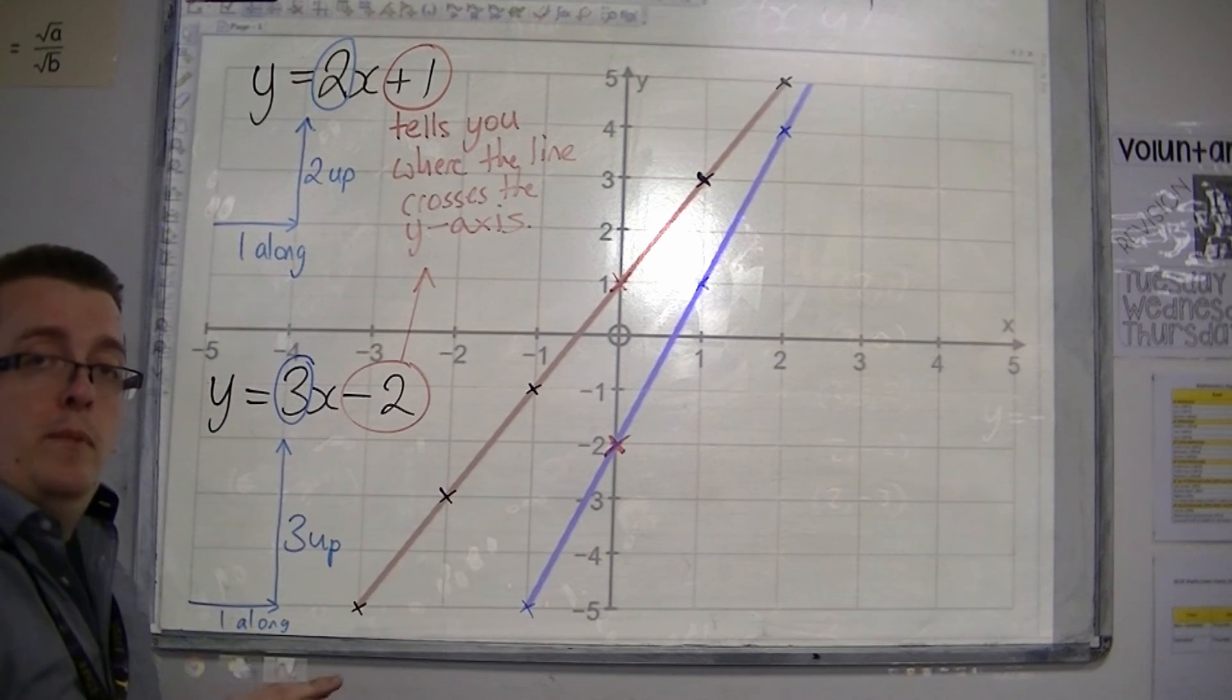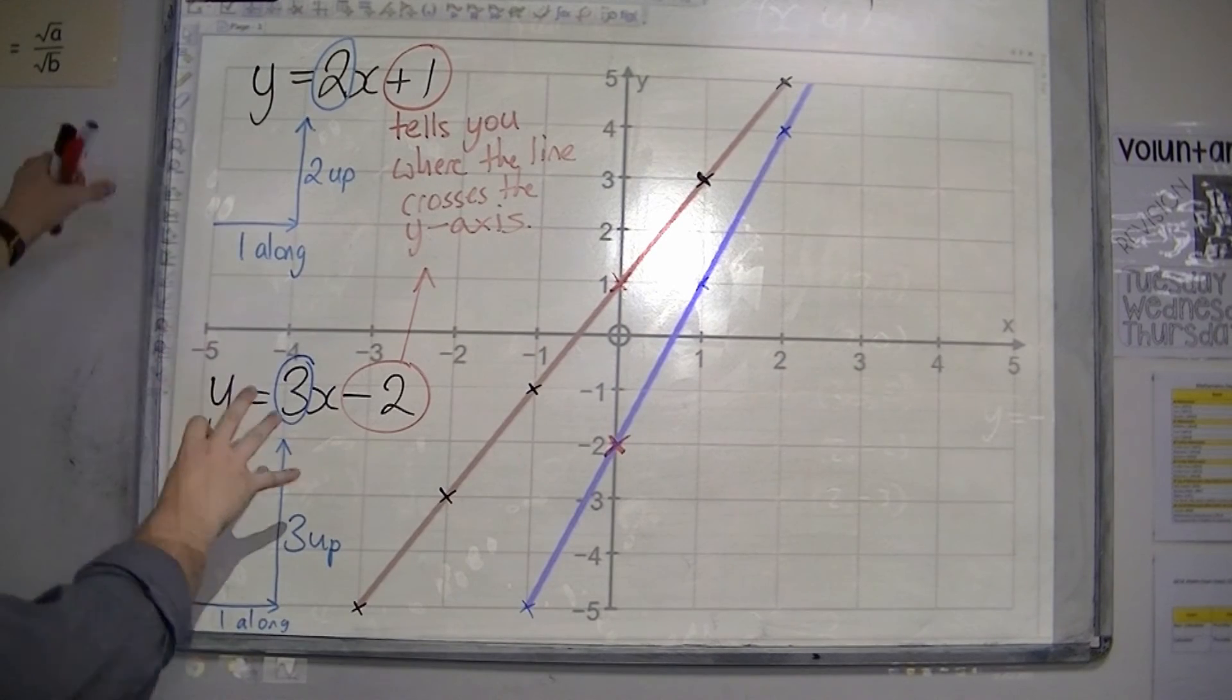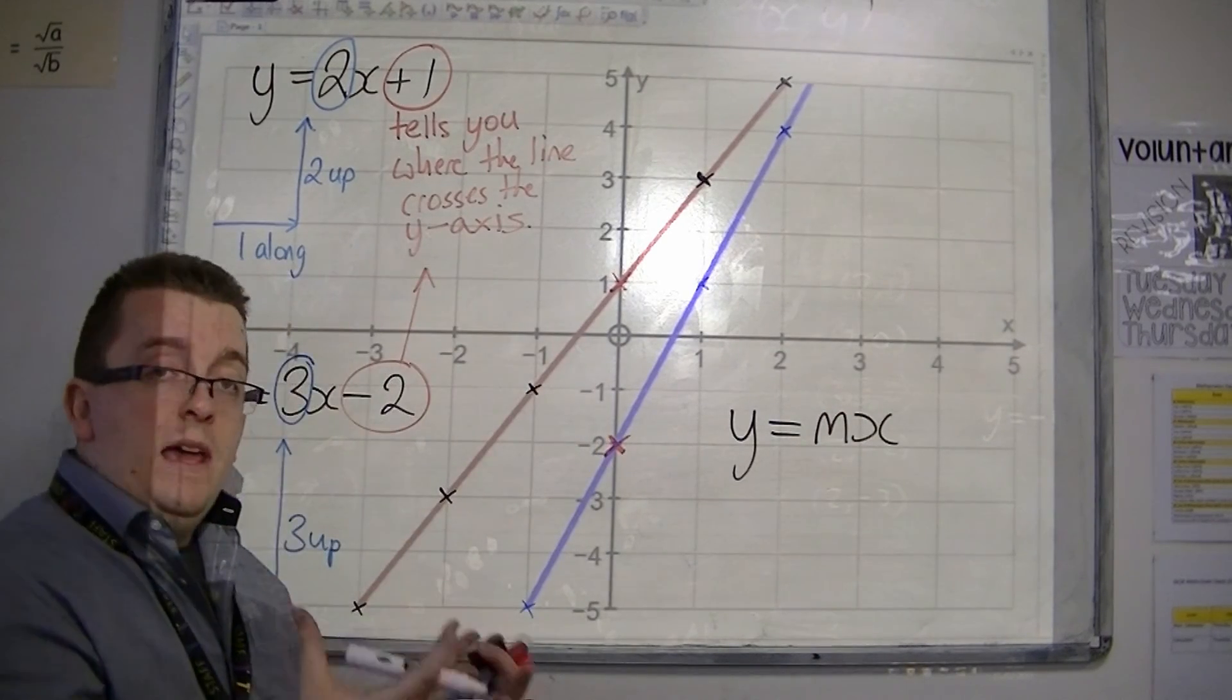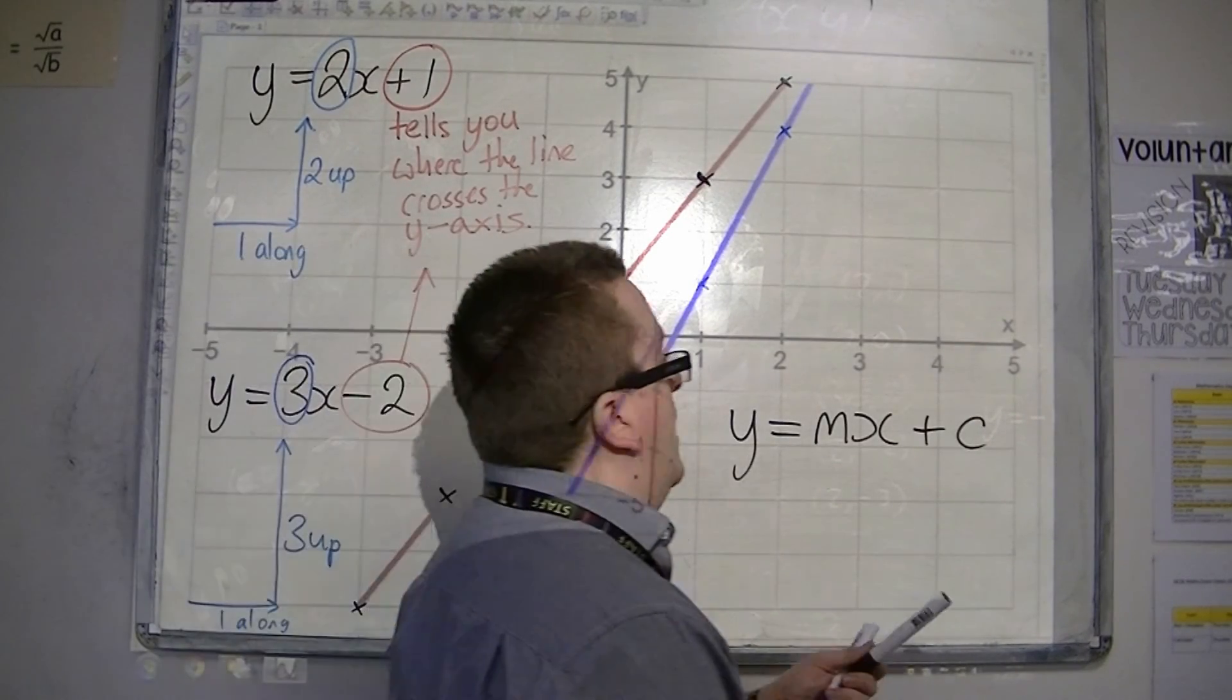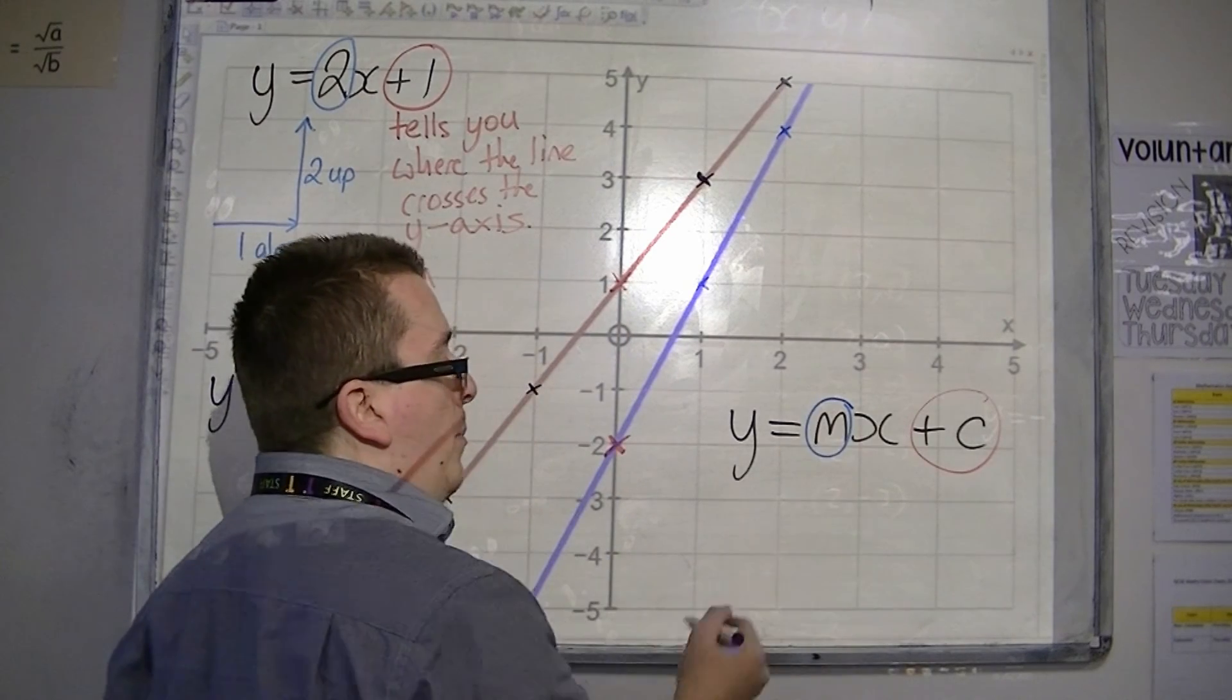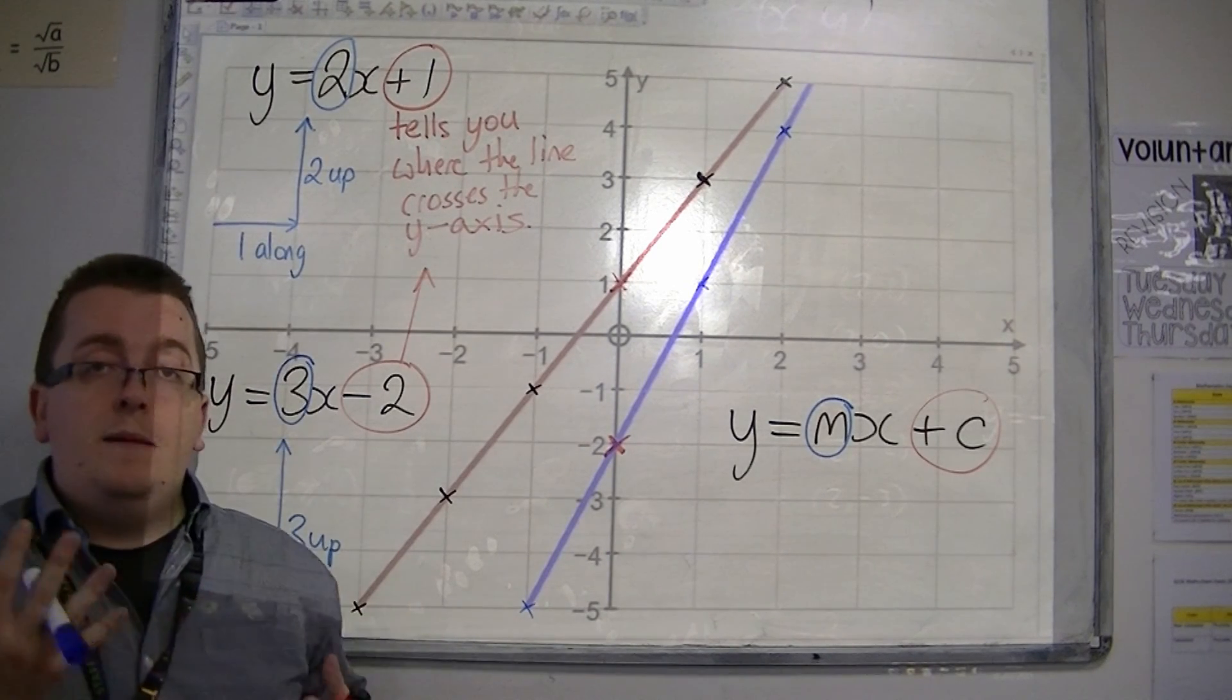So the larger the number, the steeper the line. So the larger the number in front of the x, the steeper the line in this case. So it all follows a very similar format where we have a number in front of the x, which is usually denoted m, and this plus c. The plus c is the number that tells you where it crosses the y-axis, and the m is the gradient: 1 along, m up or down, in whichever case, whether it's positive or negative. So this is what you need to be able to do and be able to identify.